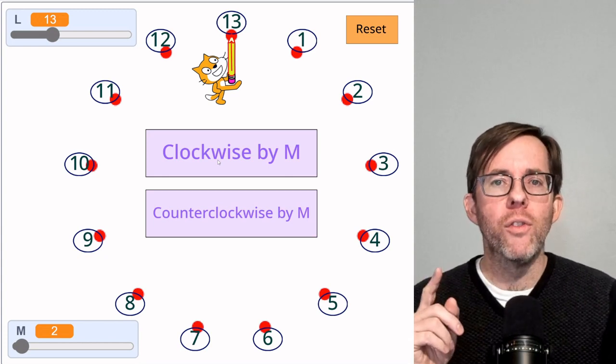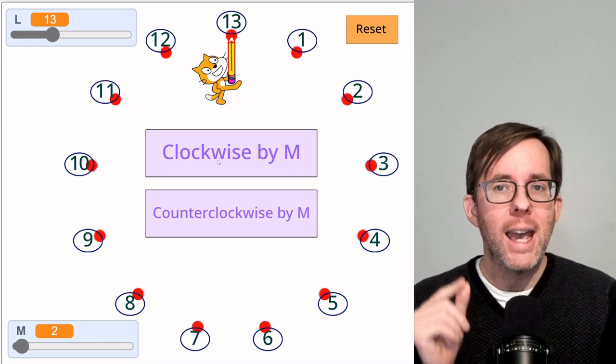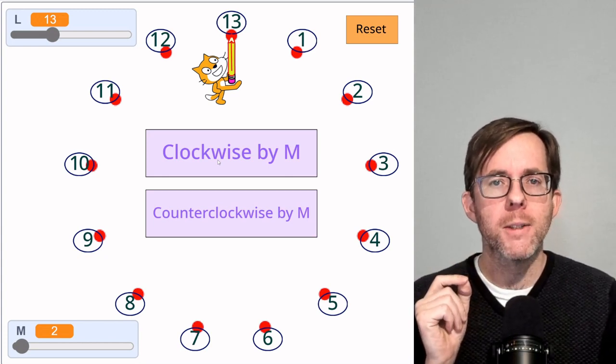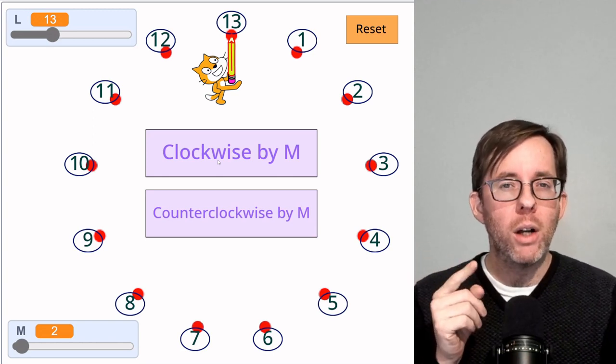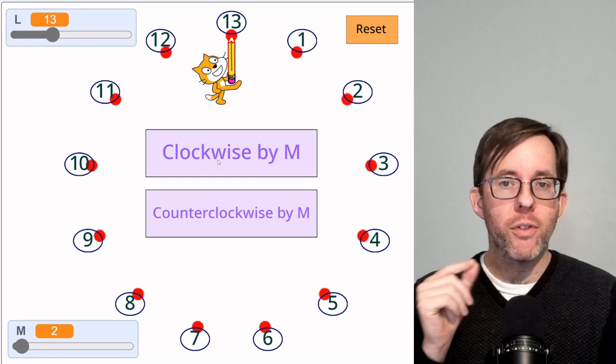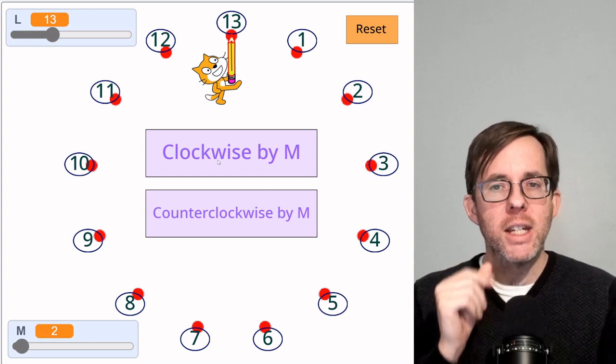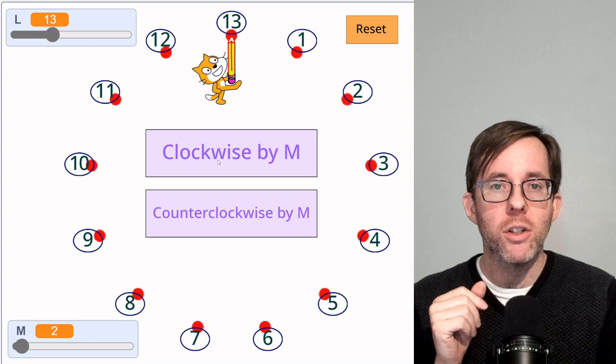Actually, if you play around with it, you'll find that for a clock of length 13, every possible value of m works. Why is this? Do you notice something different about 12 and 13? A property of 12 that can get you trapped in multiples of 3 and 4? If you guessed it has to do with divisibility or prime factors, you're right.